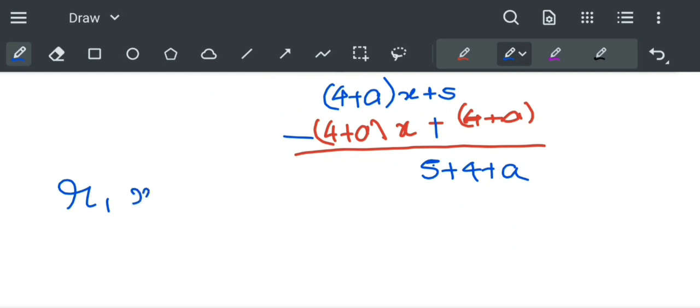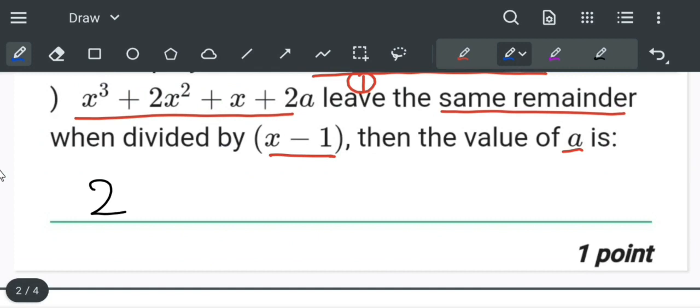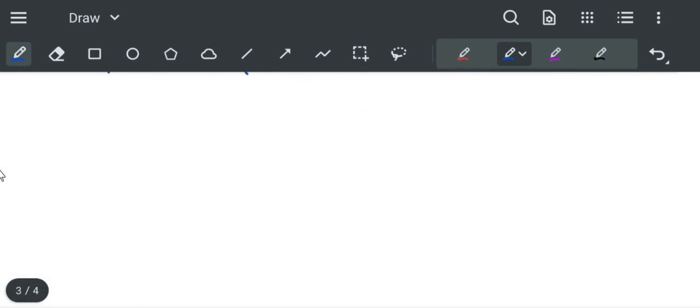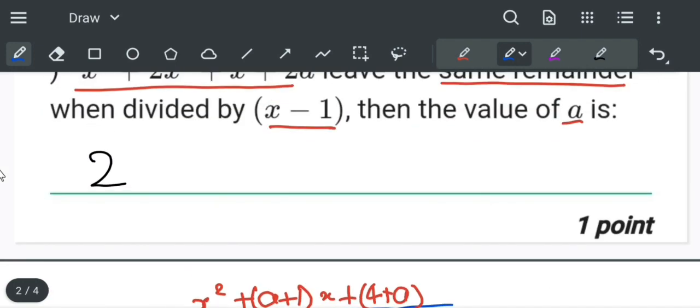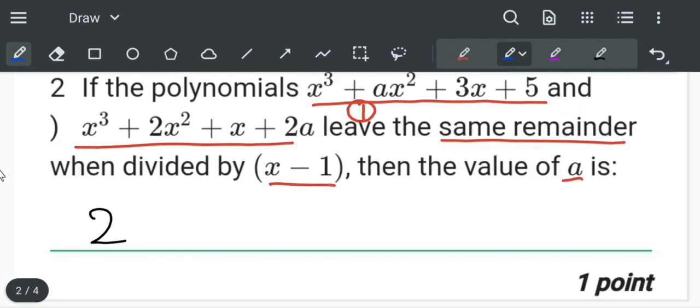Let us take it as R₁(x) = 9+a. Now let us divide the second equation by x minus 1. The second equation is x³ + 2x² + x + 2a.